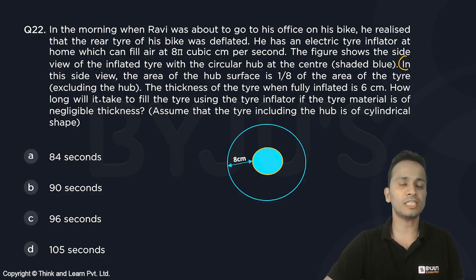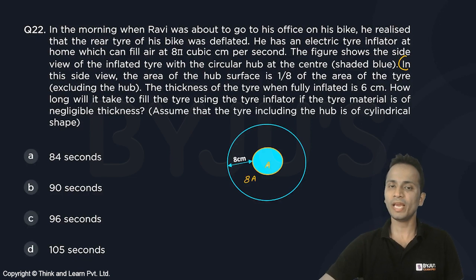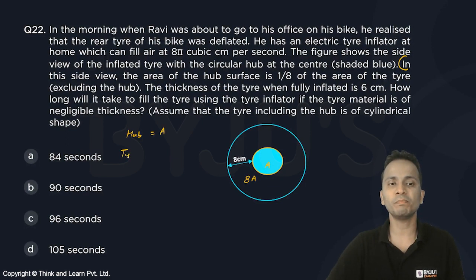So the area of tire excluding the hub, let's say if the area is 8a, the area of this hub will be equal to a. So I can say that area of hub is a, area of tire excluding hub is 8a, so area of the complete tire will be equal to 9a.